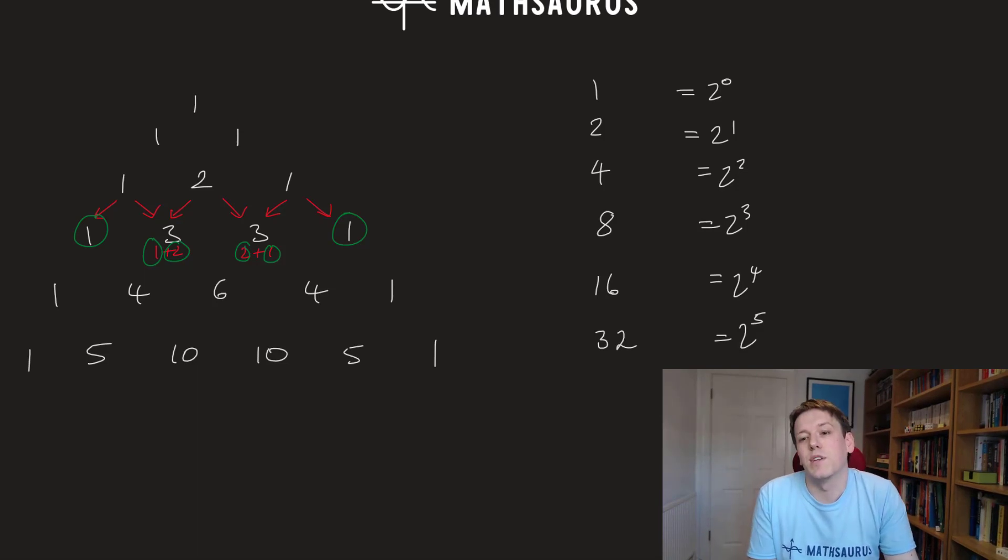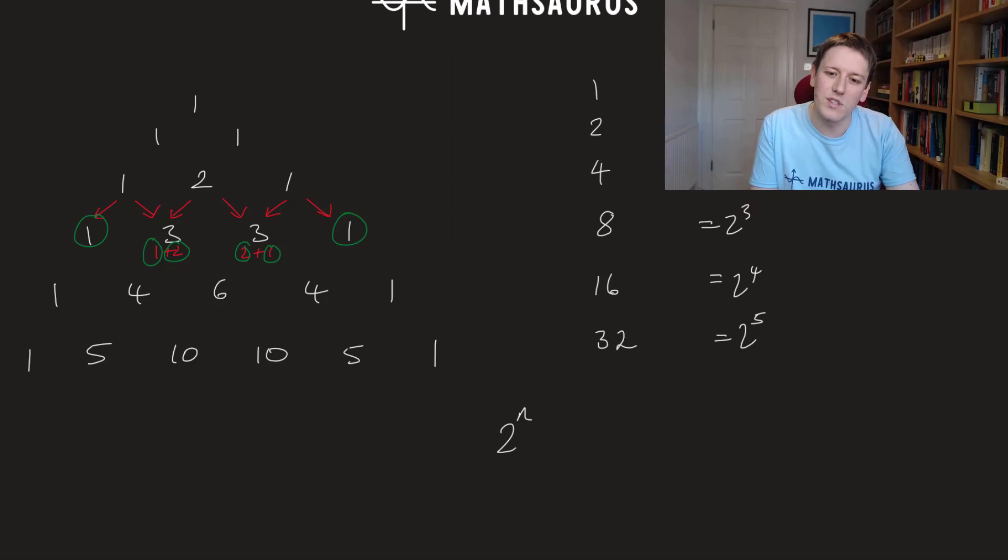Okay, so we've actually proved something that you can write down in a slightly fancy way here if you want to. What would we be showing? We're showing that 2 to the n is equal to the sum from r equals 0 to n of n factorial over r factorial times n minus r factorial. All right, but this is really just something, as I say,